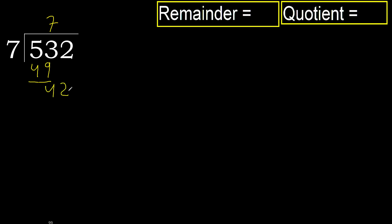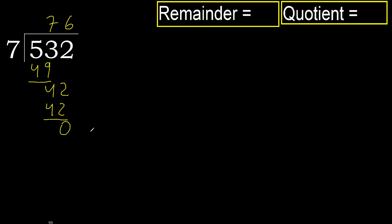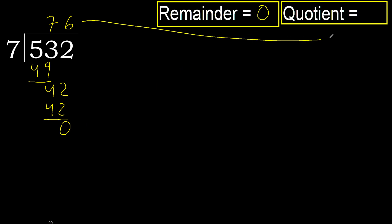Next, bring down 2, giving 42. 7 multiplied by 6 is 42, which is not greater. Subtract: there is no remainder. Therefore, 532 divided by 7 is 76.